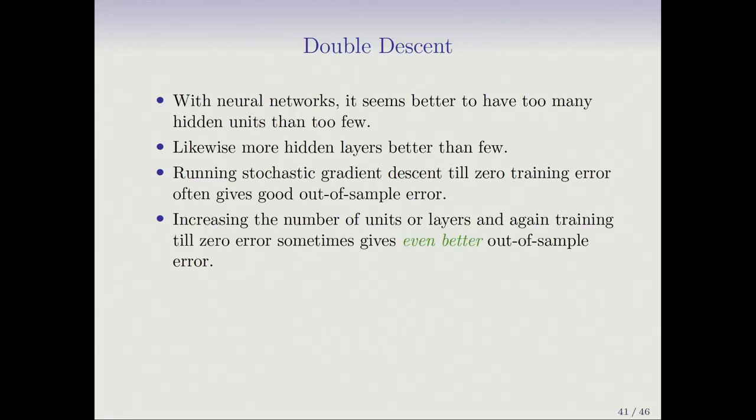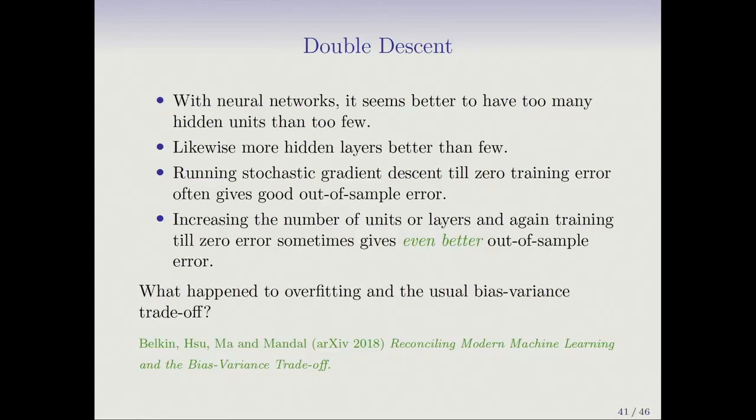So what happened to overfitting and the usual bias-variance trade-off? This set off a firestorm of papers and research, and one of the original papers is referenced here, with the title 'Reconciling Modern Machine Learning and the Bias-Variance Trade-off.' The message from these papers is that the bias-variance trade-off is all wrong in modern settings. People have talked about the U-shaped error curve for test error and said it's wrong — that it doesn't apply to neural networks.